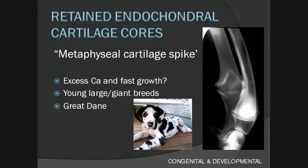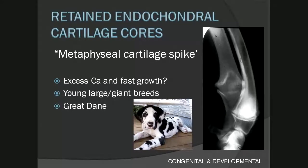The pathophysiology is uncertain — it's not clear whether it's dietary, such as excess calcium, or just fast growth — but it's thought that bone growth exceeds the growth of the blood supply to the physis, resulting in an inability of chondrocytes to degenerate and calcify, disrupting the normal progression of endochondral ossification. When growth slows down again, the blood supply can catch up and the bone will ossify normally. This typically occurs in young large or giant breed dogs, and the Great Dane is overrepresented.